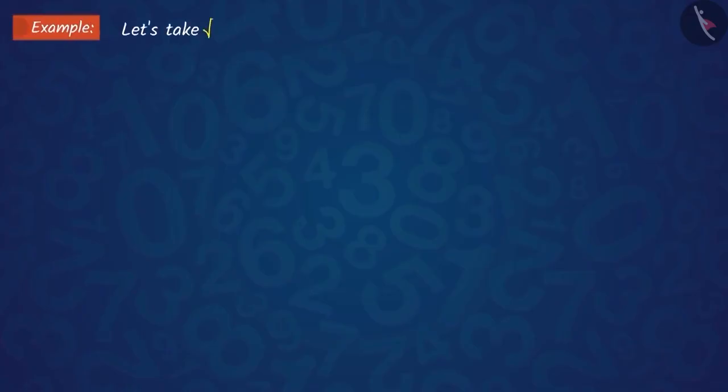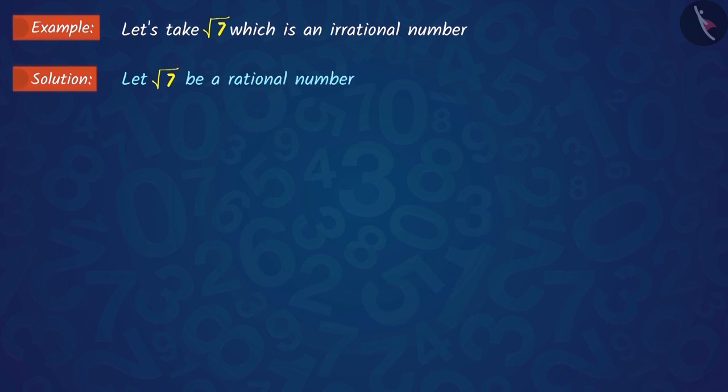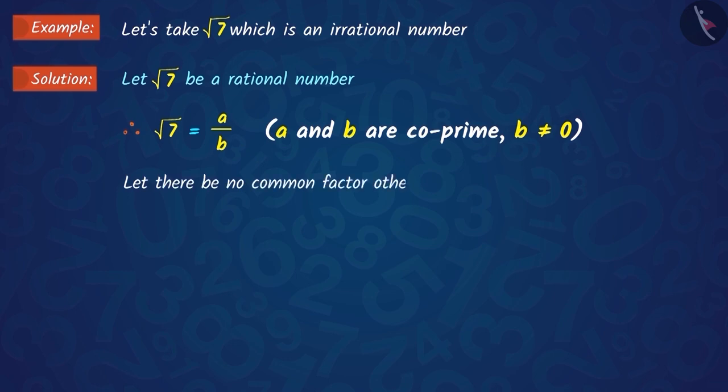Let us consider the square root of 7 which is an irrational number. Suppose that the square root of 7 is a rational number. Therefore, we can obtain two integers A and B such that the square root of 7 is equal to A upon B and B is not equal to 0. Suppose A and B do not have any common factor other than 1, where A and B are co-prime.